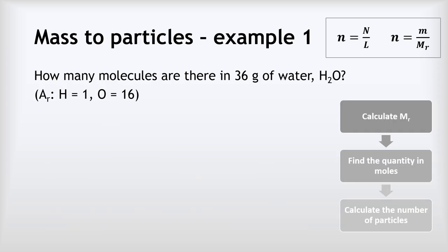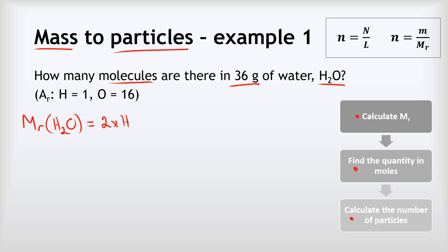Example one: how many molecules are there in 36 grams of water, H₂O? Our approach will be to calculate the relative formula mass first, then use that to find the quantity in moles, and then calculate the number of particles. So the MR of H₂O equals 2 times hydrogen plus 1 times oxygen, which is 2 times 1 plus 1 times 16, giving an MR of 18 for water.